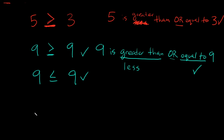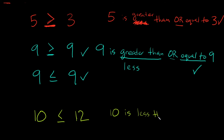One more example: 10 and 12. Write down your two numbers, eat the bigger number so the symbol opens toward 12, and include the equal sign. Reading left to right: 10 is a smaller number than 12, so 10 is less than or equal to 12. Checking the answer — 10 is not equal to 12, but it is less than 12, so that checks out.